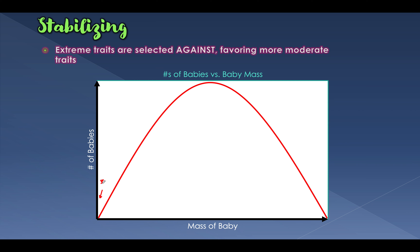We don't have a lot of babies being born at around three pounds, because babies born that small are probably premature and sadly many don't survive — though we've gotten much better at that with modern medicine. On the other end, there aren't a lot of 15-pound babies either, because that makes for very difficult pregnancies. Most babies are born somewhere in the middle, around seven to eight pounds.